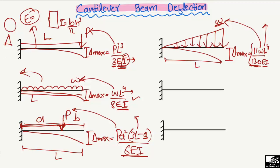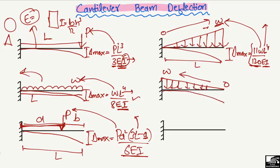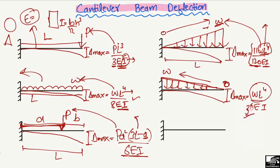When the uniformly varying load starts from zero at the fixed end and increases to a maximum at the free end, the maximum deflection still occurs at the free end, but the formula changes because the load starts at zero and increases. In this case the maximum deflection is equal to WL⁴ divided by 30EI. Here the coefficient is 1/30, compared to 11/120 in the previous triangular load case.